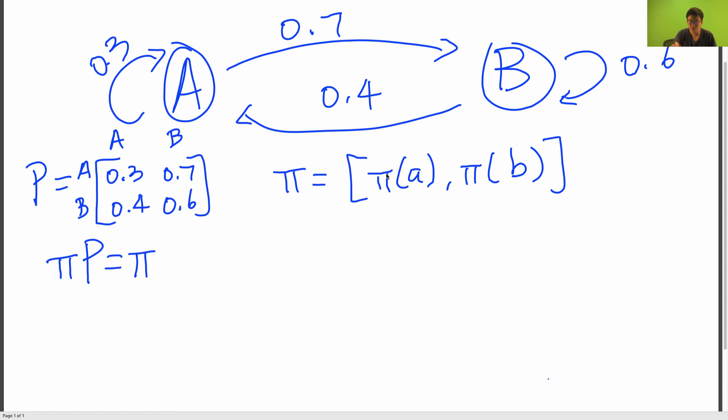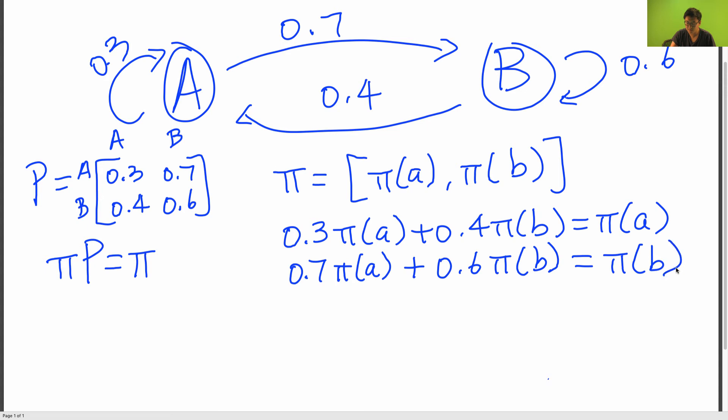So if I multiply this row vector by this matrix, I'm going to get two equations. The first equation is going to be 0.3 pi A plus 0.4 pi B is equal to pi A. And then the next equation I'm going to get, I multiply this row vector by the second column and I get 0.7 pi A plus 0.6 pi B is equal to pi B.